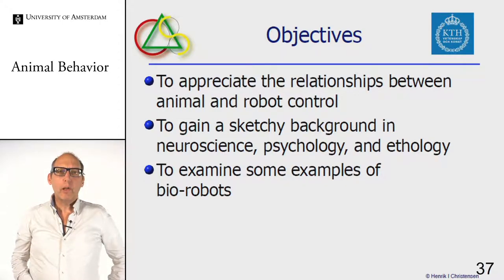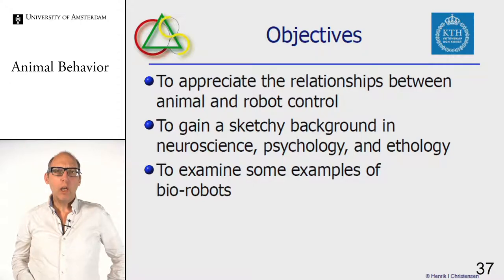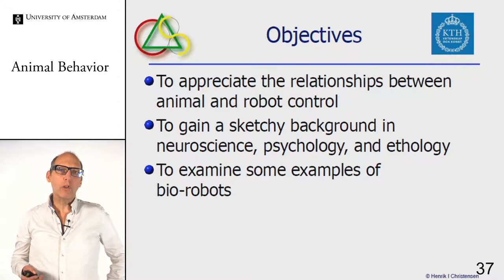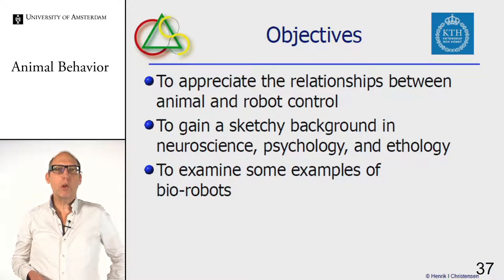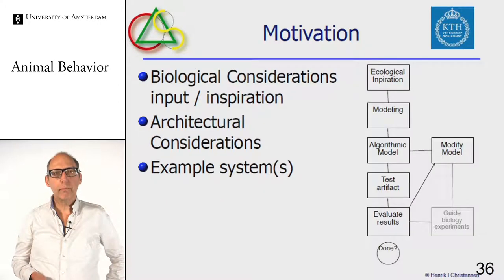We have three goals for today. First, we want to see the relationship between how behavior is controlled in animals and how that same behavior can be implemented in robots. We also try to sketch how robot control is inspired by neuroscience, psychology, and ethology. Those three themes will continually inspire us throughout the course.